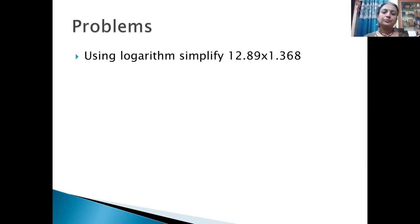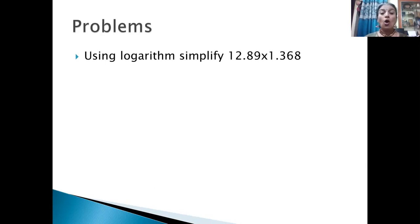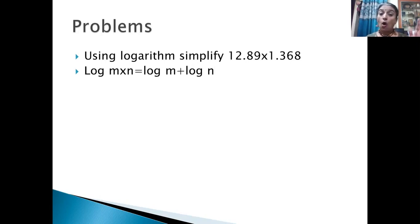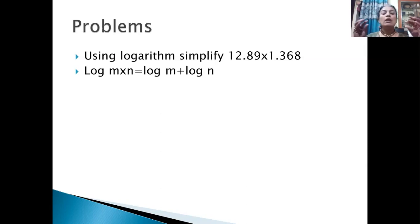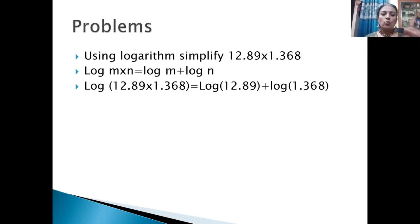Using logarithm, simplify 12.89 × 1.368. There are two numbers here: 12.89 and 1.368. Instead of multiplying these two, we are applying the law of logarithm. There are two numbers being multiplied, so the law is log(m × n). Here m = 12.89 and n = 1.368. So log(m × n) = log m + log n. We have to take log 12.89, then log 1.368, and add these two.